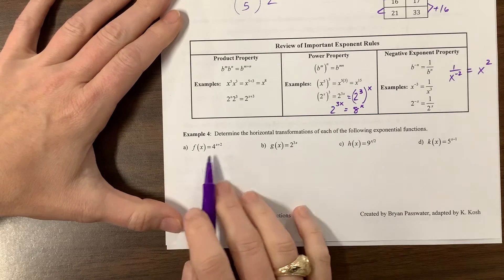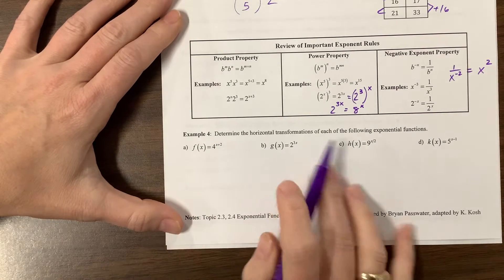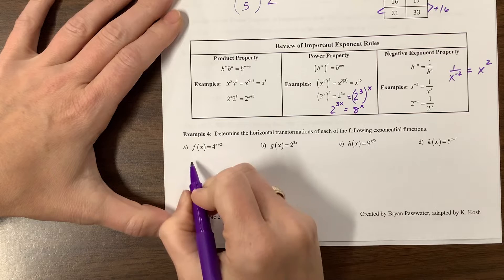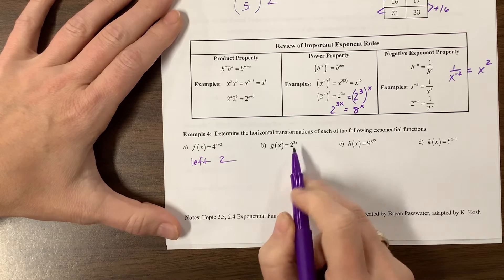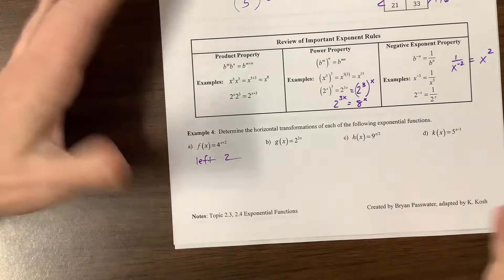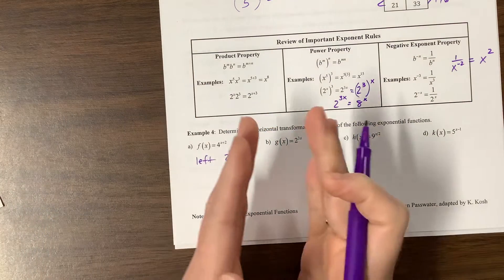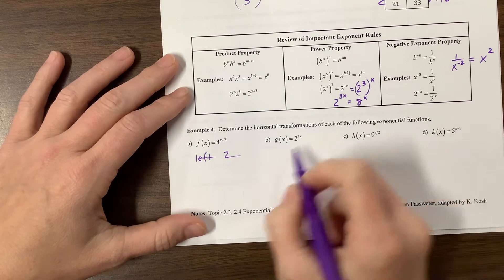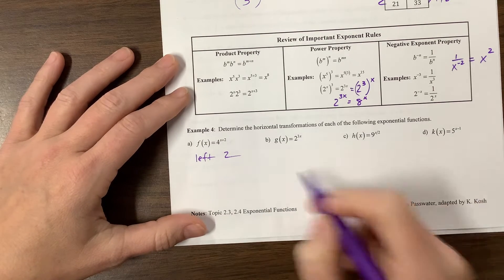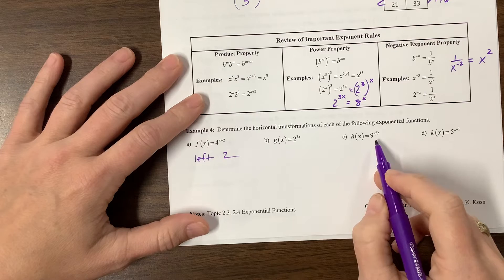On this one, we're looking to see the horizontal transformation. So what did this do? It moves us to the left 2. Okay, what did this one do horizontally? Well, this was a horizontal compression by a factor of 3.